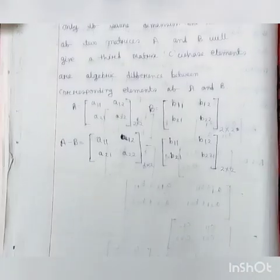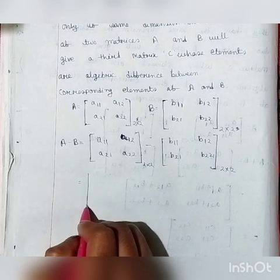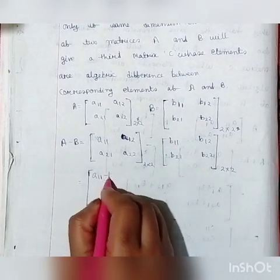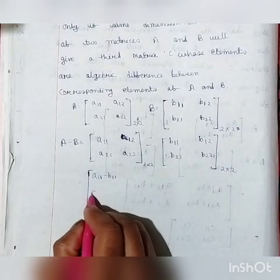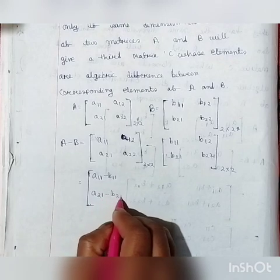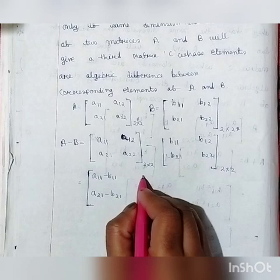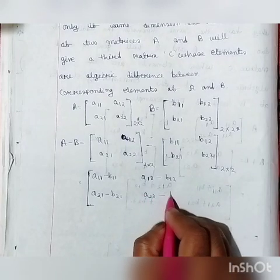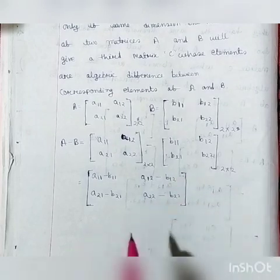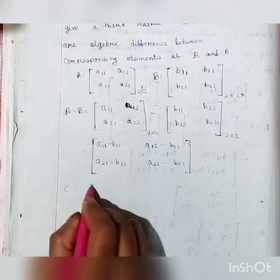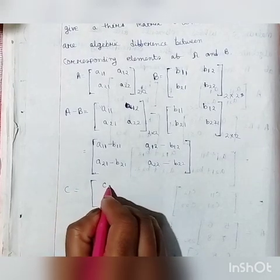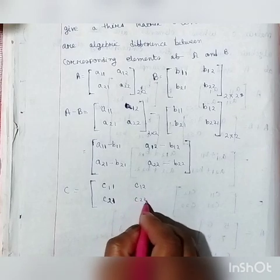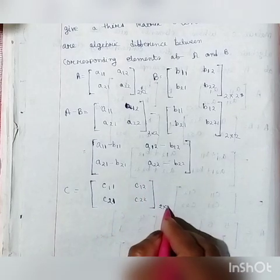So we will subtract this: A minus B gives us [a11 minus b11, a12 minus b12; a21 minus b21, a22 minus b22]. This gives us a new 2x2 matrix, which we call matrix C, with elements [c11, c12; c21, c22] — a 2x2 dimensional matrix.